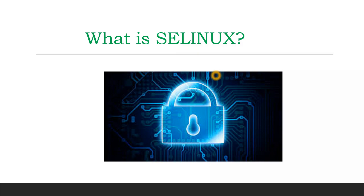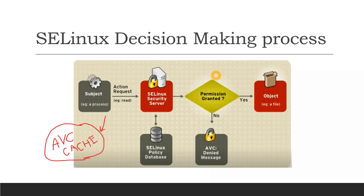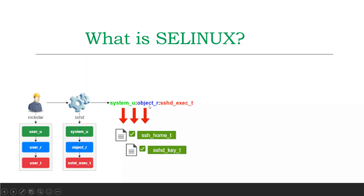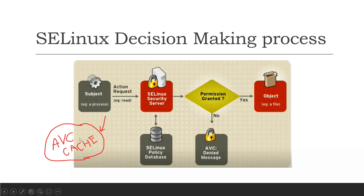SELinux is actually based on Mandatory Access Control. In SELinux, everything is treated as objects — be it a file, a process, or a user ID. There are rules written for every user: contexts, roles — all defined previously. Only if you meet all these criteria will you be given access to a particular file. All these rules are stored in the AVC cache.